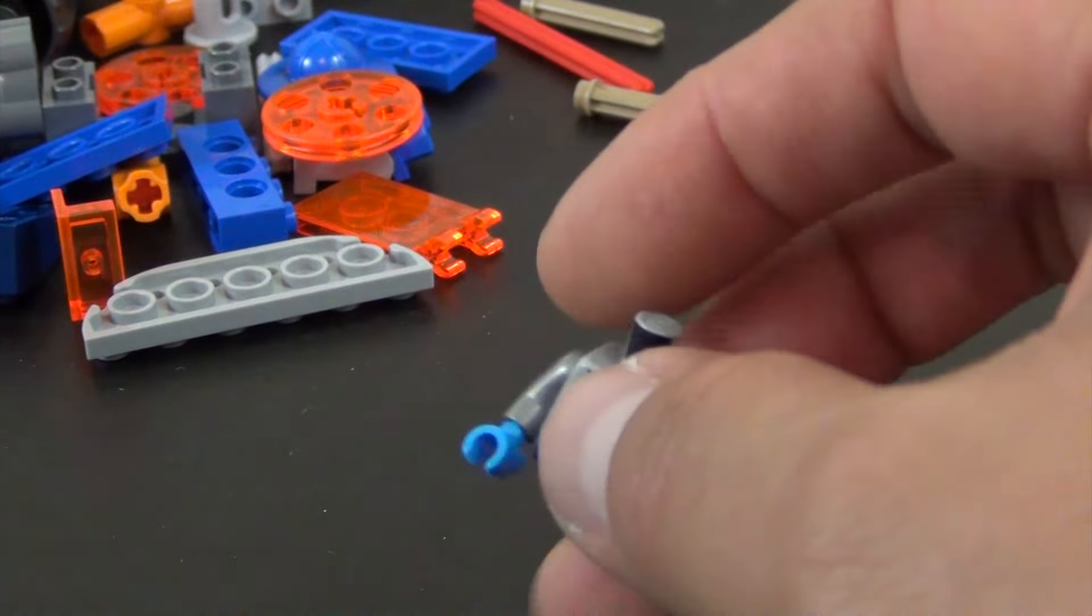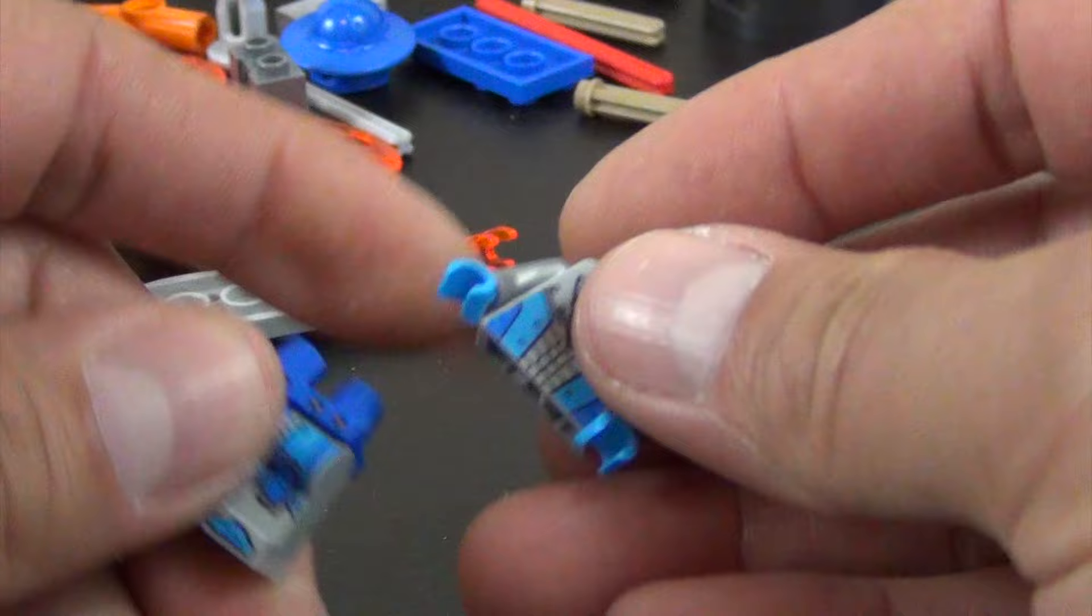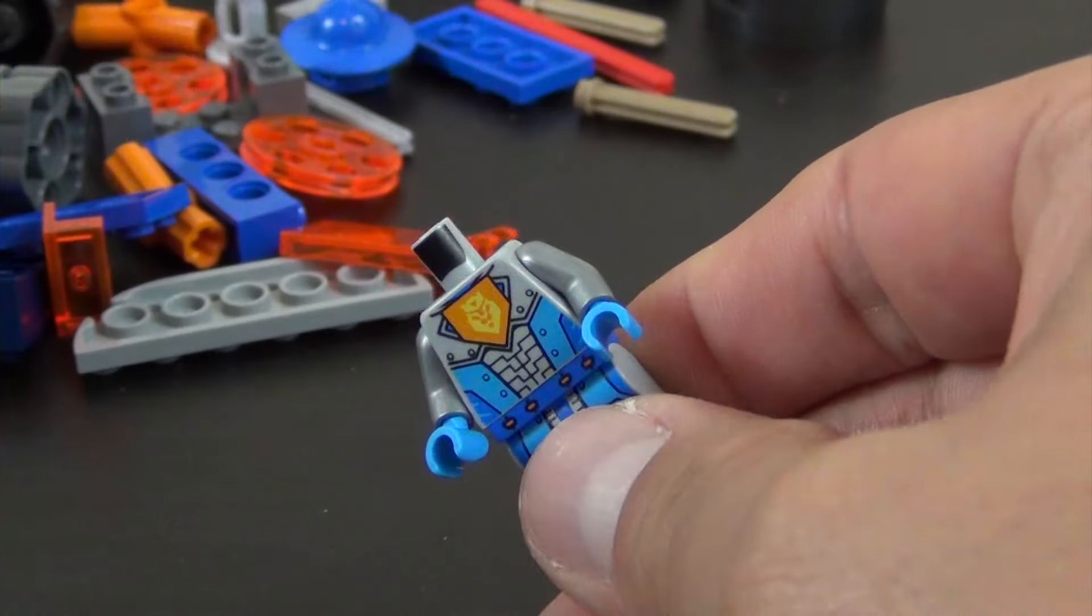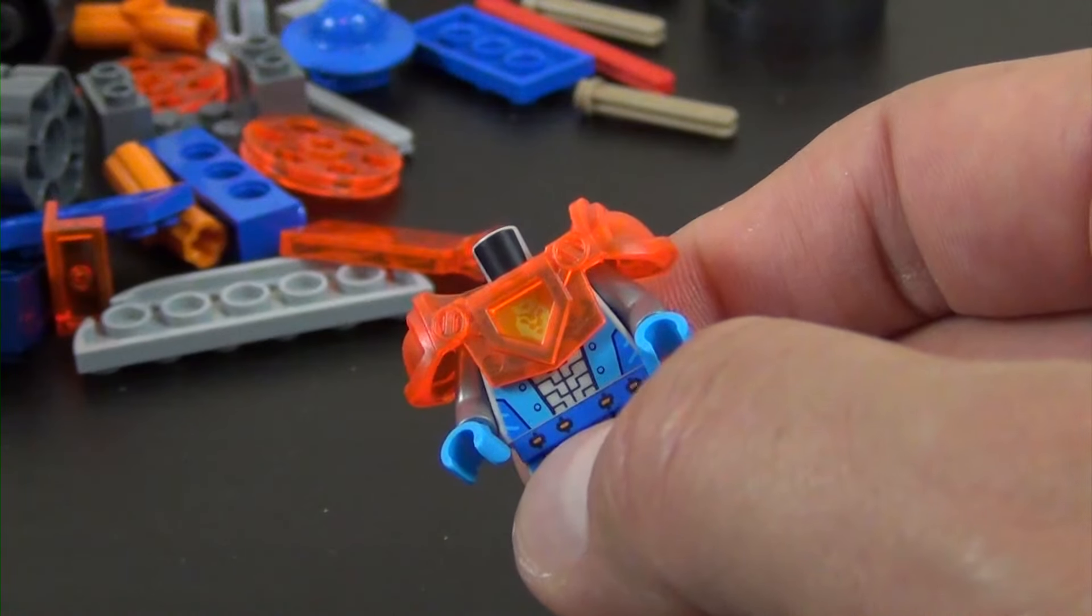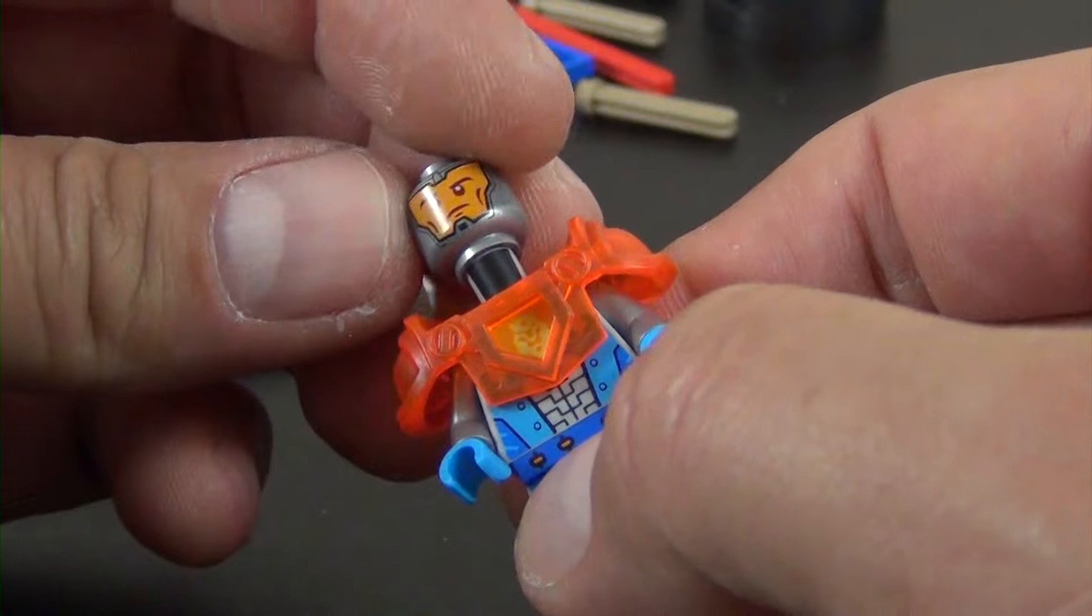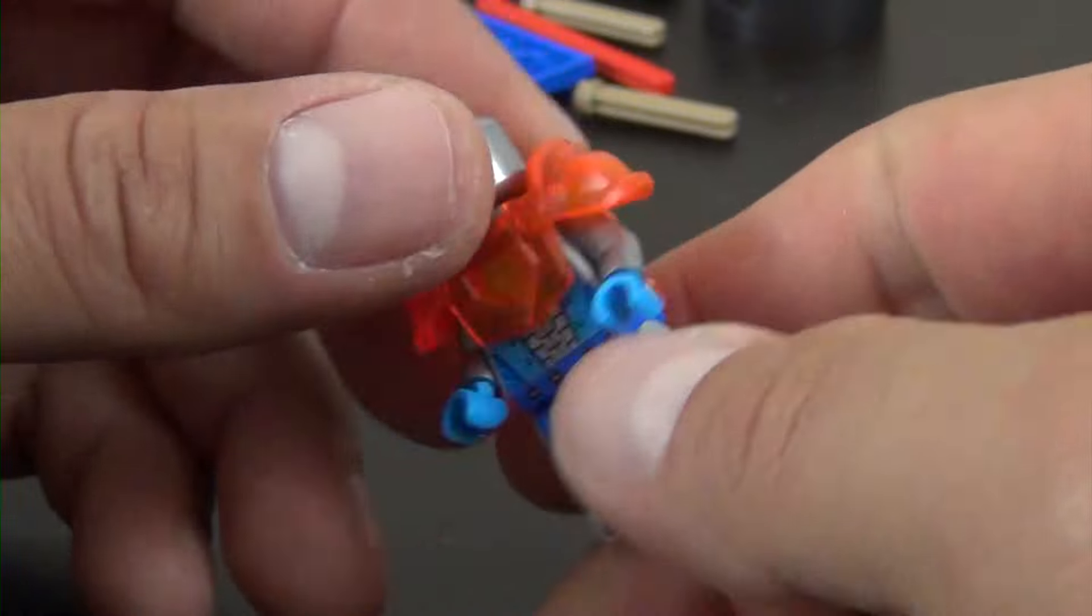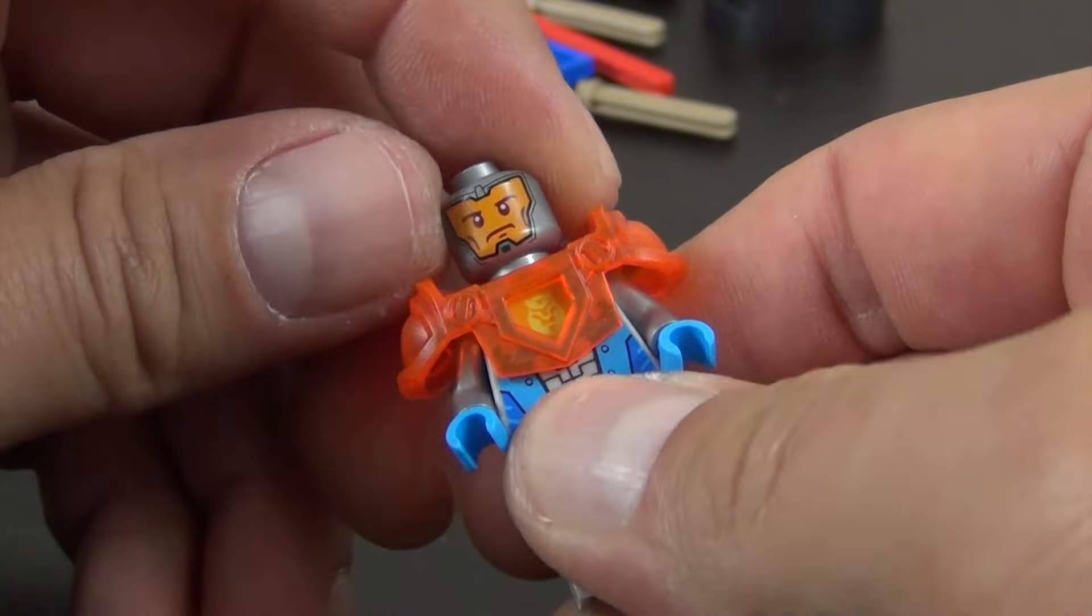So our King's Guard, similar to a lot of the King's Guard minifigures we've seen before, got the trans orange armor. He's got an armor plate over his head, you can kind of see his face through it. Double printed face, this is kind of an angry face and then this one's not much different, his mouth is shaped a little bit different. This is more of a curve and this mouth is more of like a straight line across.